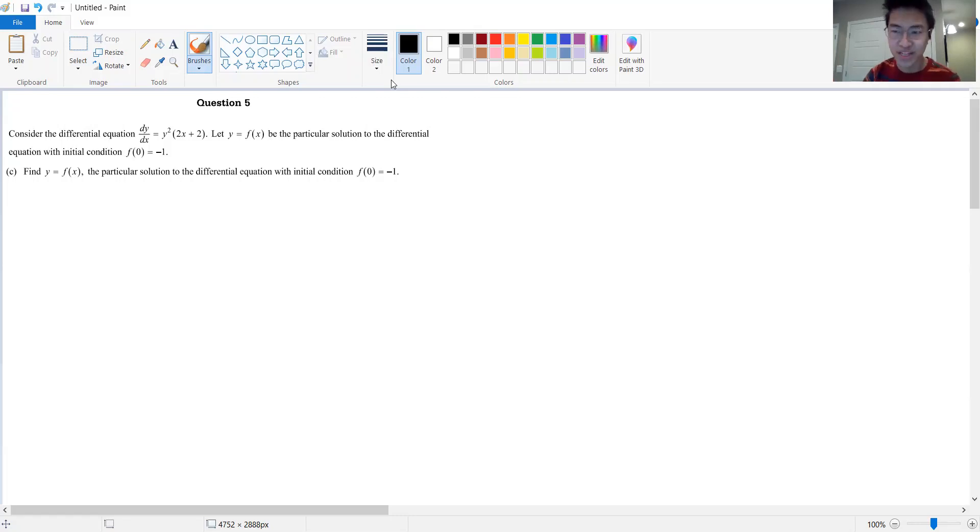Okay, so part c here is asking us to find y equals f of x, so the function which is considered the particular solution to this differential equation, and then they give us this initial condition.